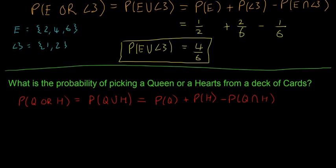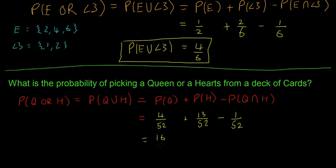The problem here is that if you just add the probability of picking a queen and the probability of picking hearts together, you'd be counting the queen of hearts twice. So you have to subtract it. The probability of picking a queen is 4/52 because there are four queens and 52 cards. The probability of picking a hearts is 13/52 because there are 13 hearts. The probability of picking the queen of hearts is 1/52. Adding all these together gives 16/52, which simplifies to 4/13.